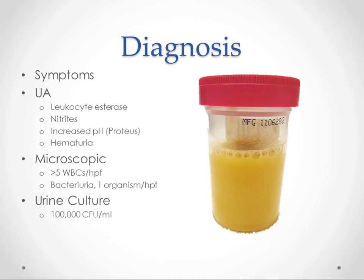Diagnosis is usually made mostly off of symptoms. You do get a UA, and if you see increased leukocyte esterase, then you know there are going to be some white blood cells, which is pretty sensitive and specific for UTI. Nitrites is not very sensitive but very specific. Increased pH you see mostly with Proteus infection, which is a fairly small subset of UTIs.